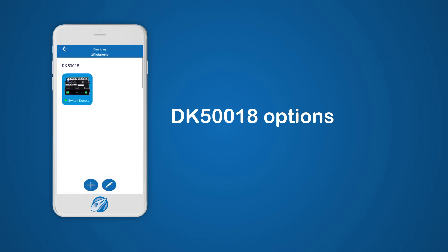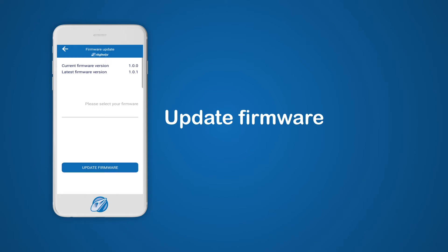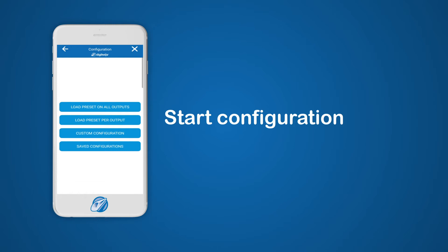When you want to use the device through DCC, please make sure the Bluetooth connection is not active. Within the Update Firmware section you can view the current firmware version of your device and see the latest firmware available. Through the firmware section you can easily downgrade or update the firmware to your needs.